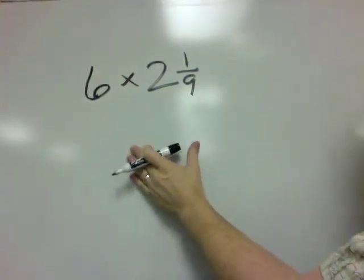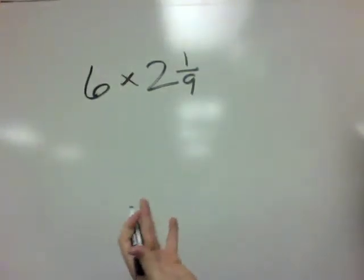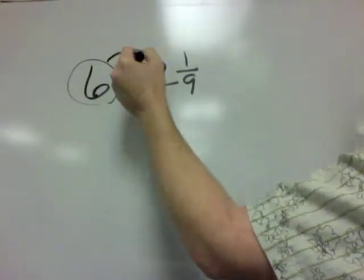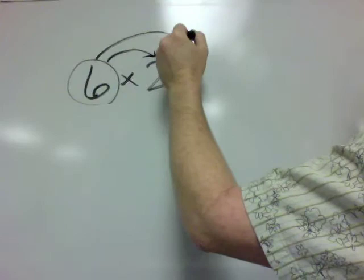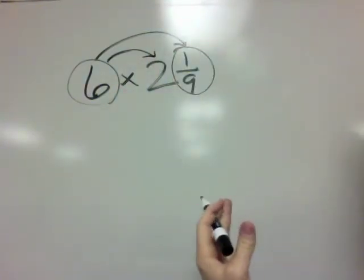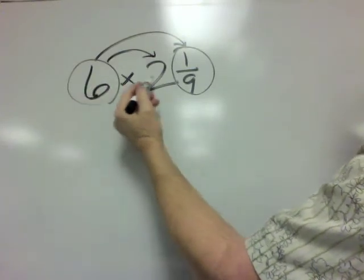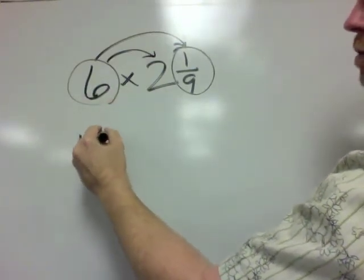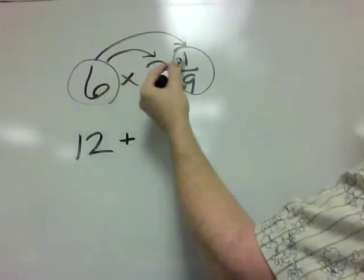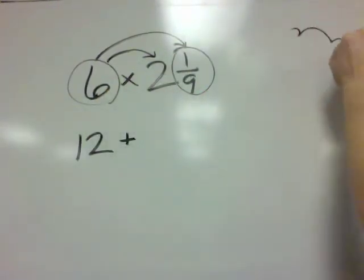There's another way to do this problem. It's using the distributive property. You could take this 6, and you can multiply it by the 2, and then you can multiply it by the 1 ninth. And sometimes doing it this way, it makes it a little easier. So 6 times 2 is 12, plus, then we're going to do 6 times 1 ninth. Now over here on scratch paper,